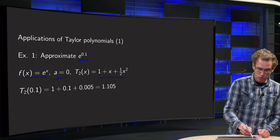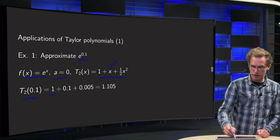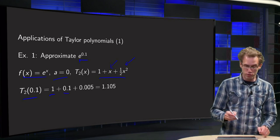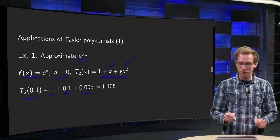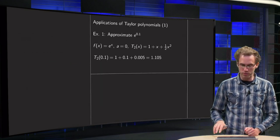Then we can compute T2 of 0.1, that's 1. So we look at 0.1 over here and over there, you get 0.1 over here, and then 0.01 over 2, so 0.005 equals 1.105. So that's the T2 of 0.1.